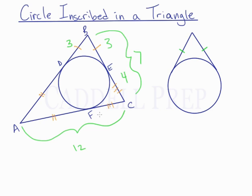This is 12. And we don't know how long AB is, but we know that this is 12. EC is 4, so that means FC is 4.